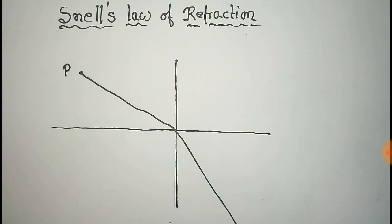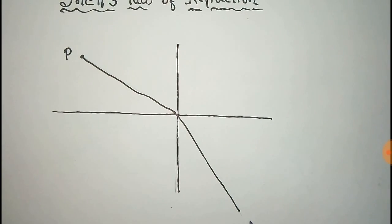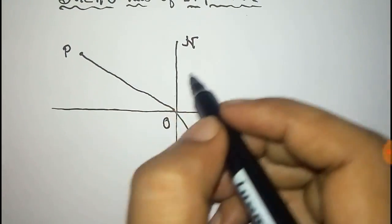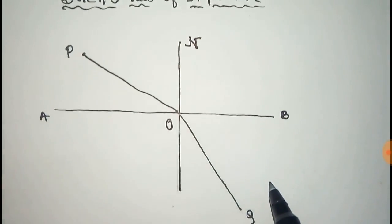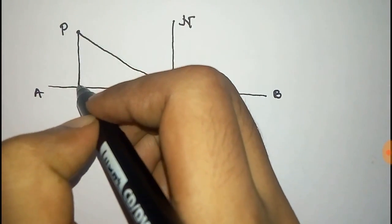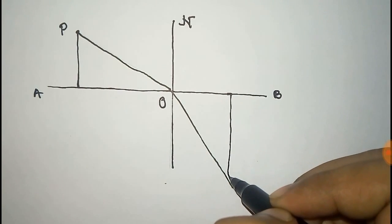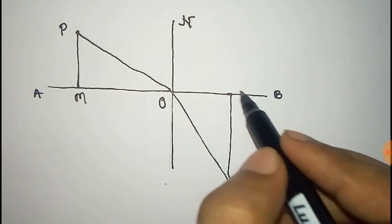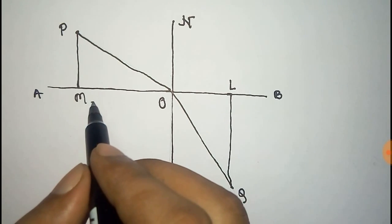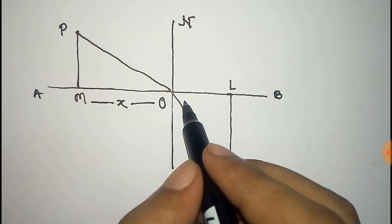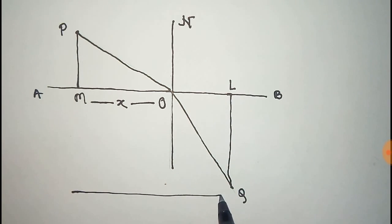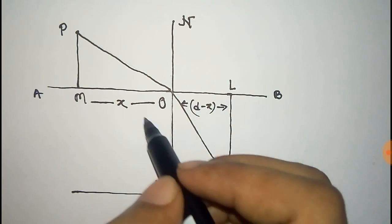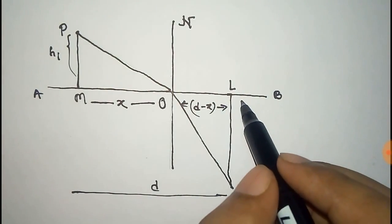Now the source is renamed as P, the ultimate point is Q, and this point is O, this is N, this is A, and this is B. Now join these two points. Name this as M and this as L, and take this distance as X. So if the total distance is D, then it will be D minus X, that's OL. And the height is H1 and this is H2.